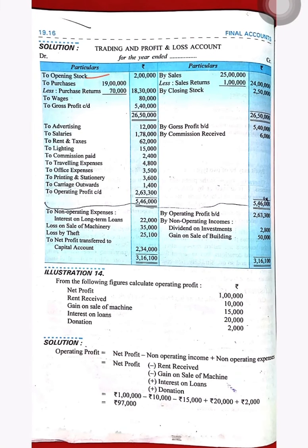First, in the trading account: opening stock, then purchases after deducting purchase return, then wages on the debit side. On the credit side: sales minus sales return, and closing stock. From this, we get our gross profit of 5,00,000, which is carried forward to the P&L account.